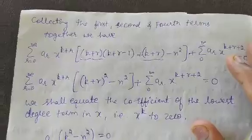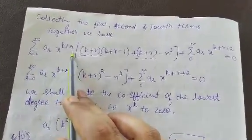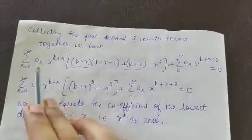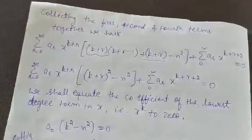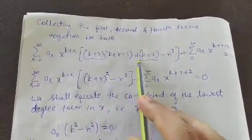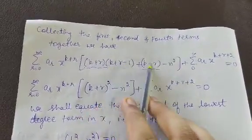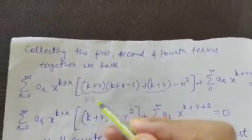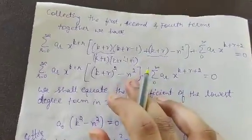Collecting the first, second, and fourth terms together, we take aᵣ x^(k+r) as common and write what remains: (k+r)(k+r−1) + (k+r) − n². Taking (k+r) as a further common factor gives (k+r)[(k+r−1)+1] = (k+r)², so the bracket becomes (k+r)² − n². The third term, involving x^(k+r+2), is written separately as it is.